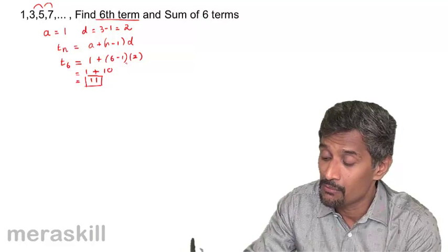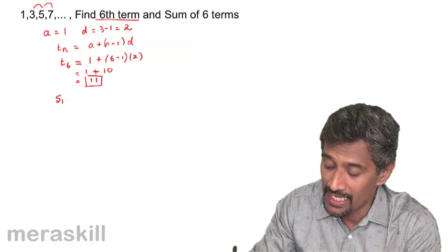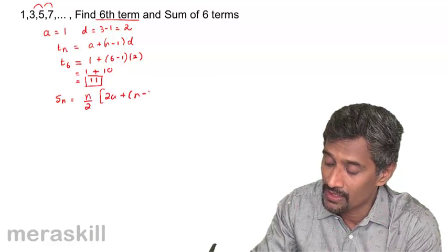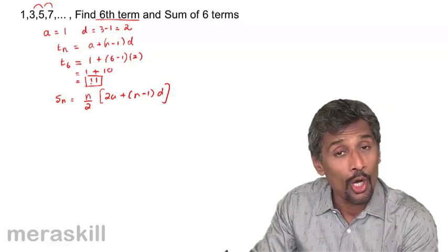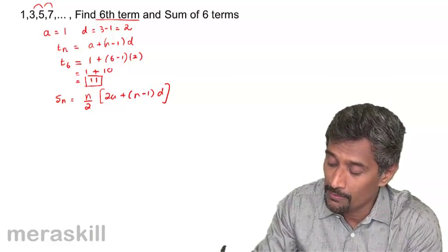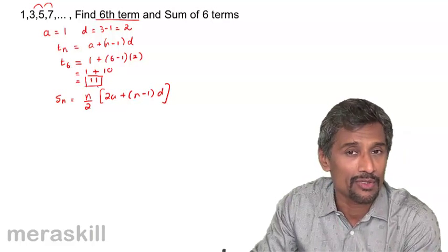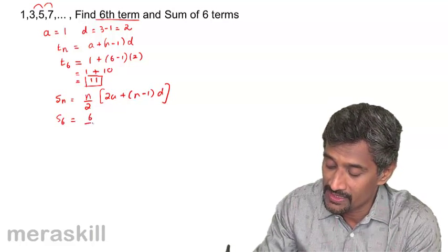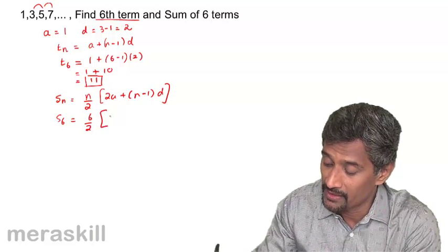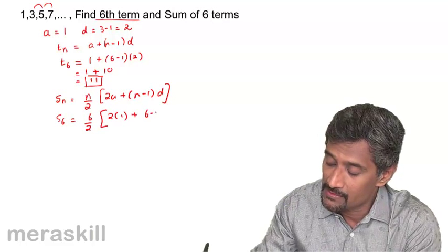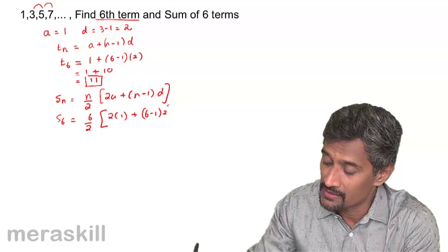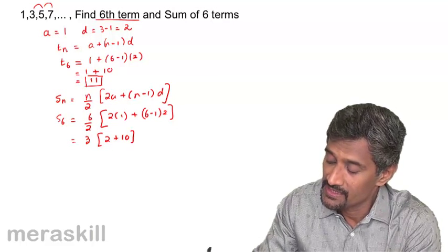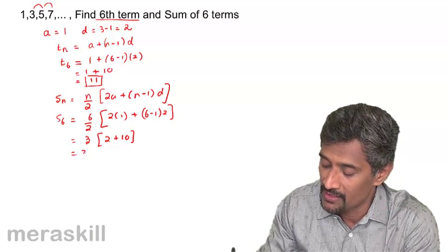For the sum of six terms, we use Sn = n/2 × (2a + (n-1)d), or equivalently Sn = n/2 × (t1 + t6). Since t6 is already found as 11, and n = 6: S6 = 6/2 × (2×1 + (6-1)×2) = 3 × (2 + 10) = 3 × 12 = 36.